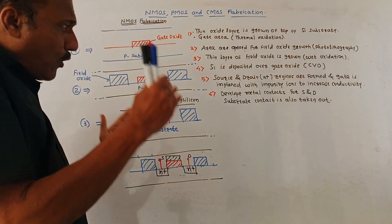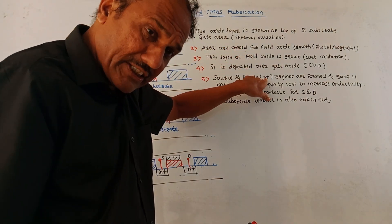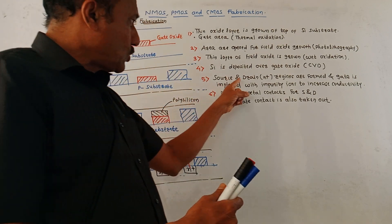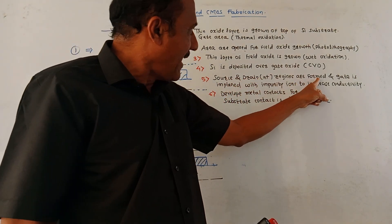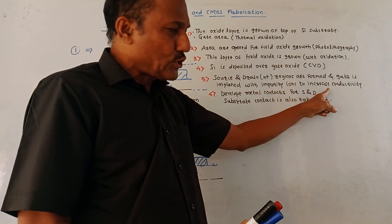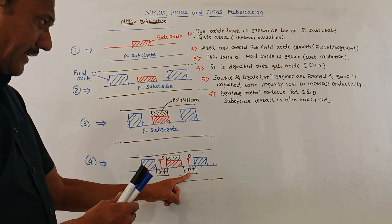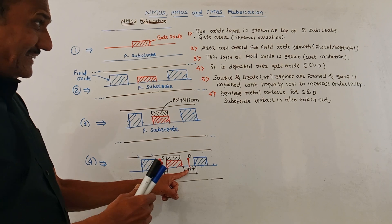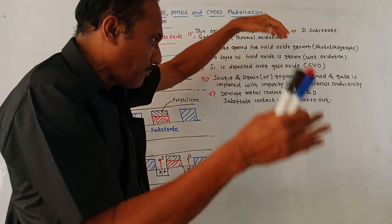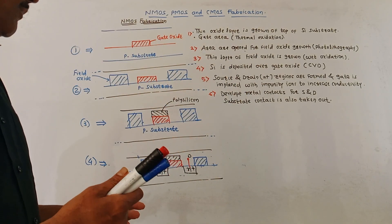Now we need to form source and drain regions. These are N-plus regions because we want to fabricate an NMOS transistor. The source and drain N-plus regions are formed, and the gate is implanted with impurity ions to increase the conductivity. Certain impurity ions are added which help improve the conductivity of the device.